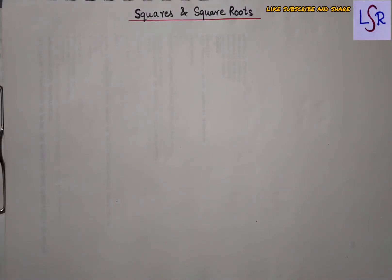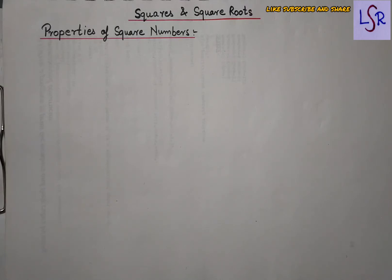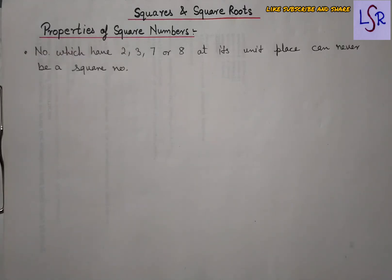Hello everyone, today we are going to start with squares and square roots and deal with the properties of square numbers. The very first property is: the number which has 2, 3, 7, or 8 at the unit place can never be a square number.